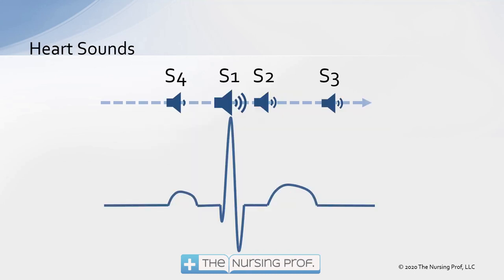Let's put this together with our EKG. For those of you who look at EKGs, you'll know the P wave represents atrial depolarization. The atria depolarize and contract, and then we get our S1 — notice S1 is coming over the QRS complex. Remember, it's the valves closing after the contraction causing the sound, so S1 comes after atrial depolarization. S2 comes after ventricular depolarization, represented on the EKG by the QRS complex. We also have S3 and S4 listed there, which we'll discuss as we progress.